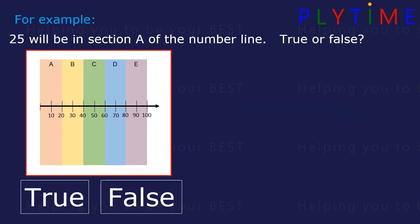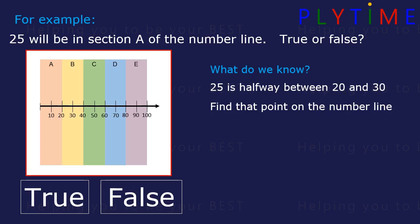25 will be in section A of the number line. True or false? What do we know? We know 25 is halfway between 20 and 30. Let's find that on the number line, it will be here. Is 25 in section A? No, it's in section B. So we tick the correct answer, this is false, it's not in section A.